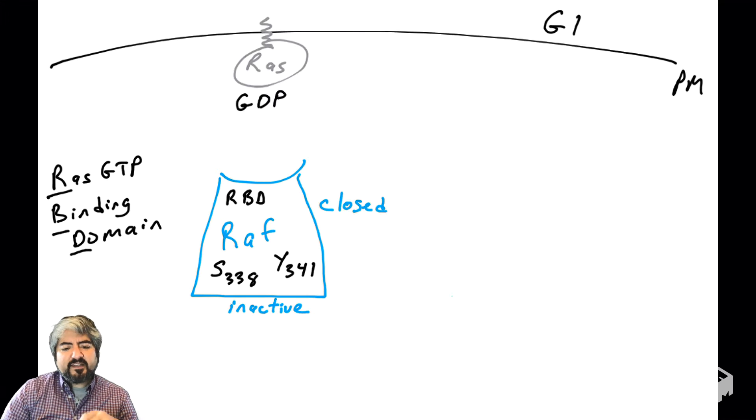We covered in previous videos this protein called RAS. RAS can bind GDP, which is what it binds when cells are in G1. Here is a cartoon of RAS bound to GDP. When cells are in G1, the RAF kinase is in this closed conformation, and it is inactive. It's a kinase, but it's not functional, not active.